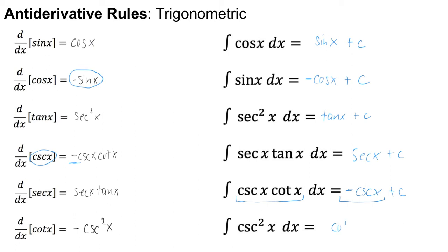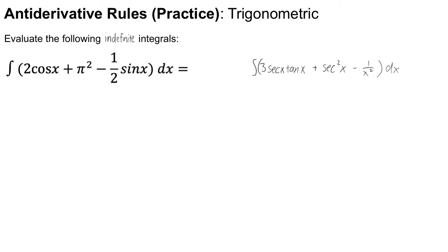And finally we got cosecant squared, that's from the cotangent x, but again cotangent x gives us a negative sign so I need to make sure that this is negative and then plus C. All right, so now that we have all the rules for the trigonometric functions, why don't you pause and try these two indefinite integrals.